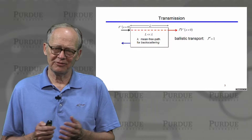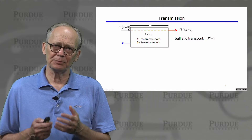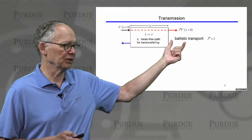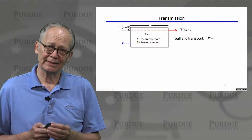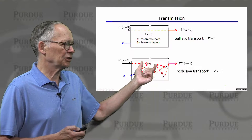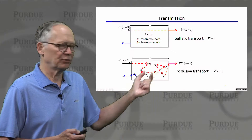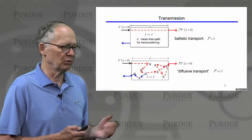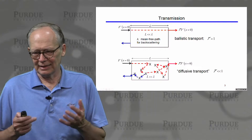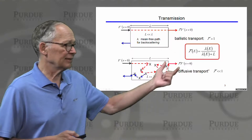We discussed what we mean physically by transmission. If we inject a flux of electrons into a slab much shorter than the mean free path, that flux emerges from the other side — all of it. The transmission is one. This is ballistic transport, where nothing impedes the flow of carriers. On the other hand, if the structure is much longer than a mean free path, carriers scatter frequently. The transmission is less than one, and in the diffusive limit, it is much less than one.